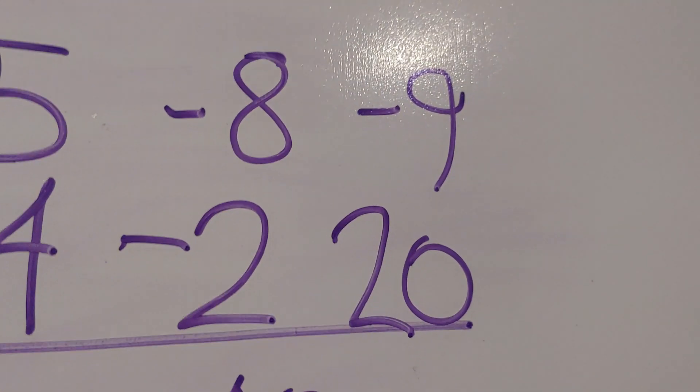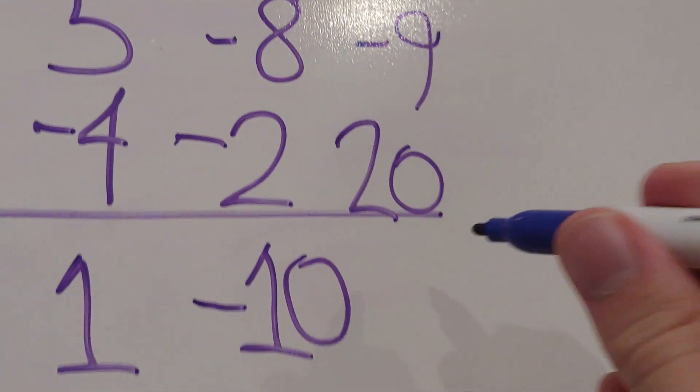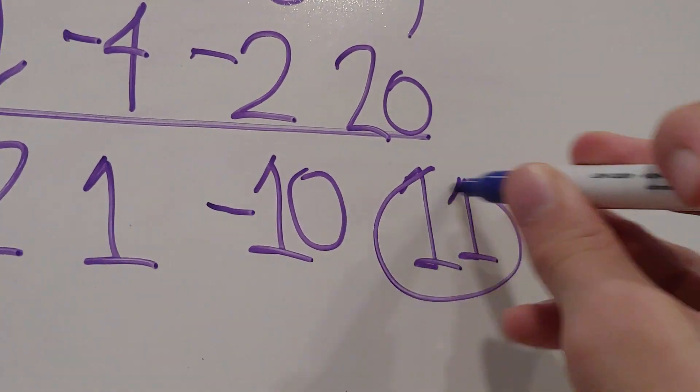And now for the final math equation, negative 9 plus positive 20. That number is positive 11.